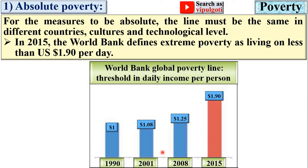With the help of this diagram, you can understand the poverty line. This is the World Bank global poverty line threshold in daily income per person. In 1990, $1 per day was the threshold. If income is below $1 per day, it is considered poverty. In 2001, the poverty line was $1.08 per day. In 2008, it was $1.25 US dollar per day. And in 2015, it is $1.90 per day.